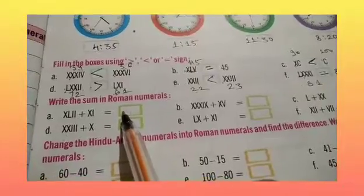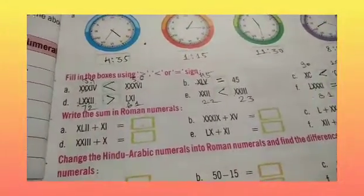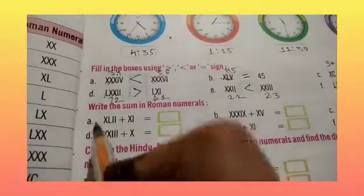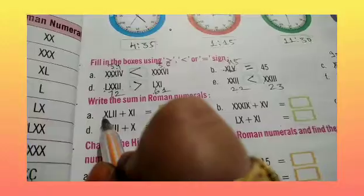तो पहले हमें यहीं पता होना चाहिए कि roman numbers हमें कौन-कौन से दिये गए हैं. So children, चलिए, L is 50, X is 10.